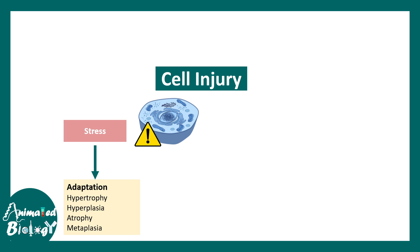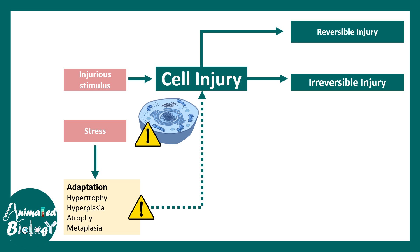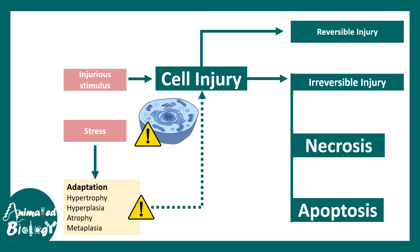What is the ultimate goal? Basically, if there is metaplasia, the cell can overcome the injury or adapt better to overcome the stress it is undergoing. But if the injury is too much and too serious, the cell cannot survive — and when the injury is irreversible, it would lead to necrosis or apoptosis. However, many injuries are reversible, so cells can combat them with specific adaptation methods.